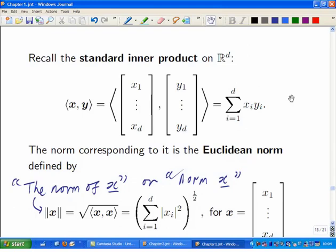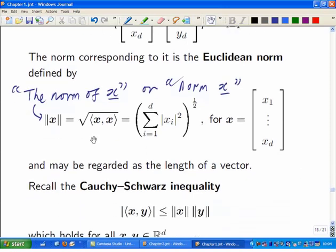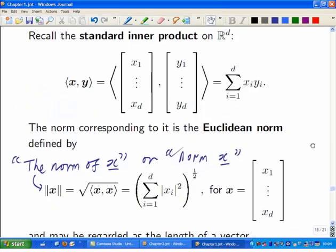And I was just reminding you last time about the inner product that you'll have met at the end of linear mathematics, which is the standard dot product. From that you get the normal vector, which is basically the same as its length. So you take the inner product of the vector with itself and take the square root, that's the norm of x.